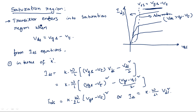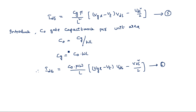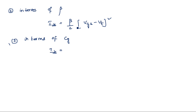In terms of beta, there is no need to rederive — the right-hand side is entirely the same. Only k·(W/L) is replaced by beta, so IDS = (beta/2)·(VGS − VT)². Next, in terms of CG: IDS = (CG · mu) / (2 · L²) · (VGS − VT)².